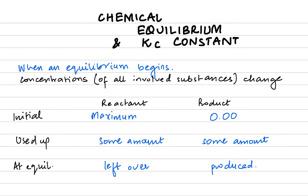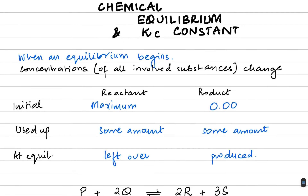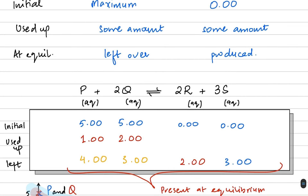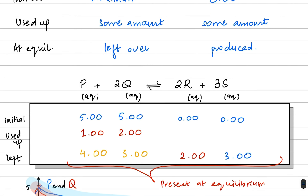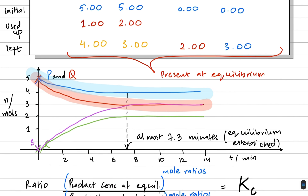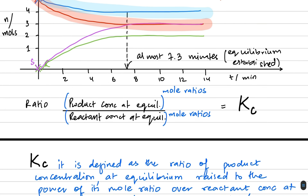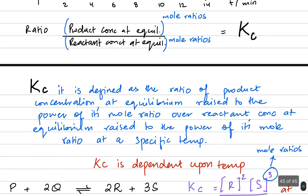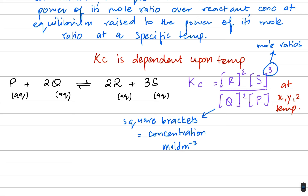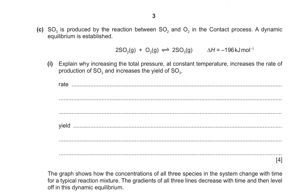Welcome back to another video by CamRoom5. Last time we talked about equilibrium and the Kc constant. As a reaction proceeds, reactant concentrations decrease while products increase. At equilibrium the lines become horizontal because the rate of forward reaction equals the rate of reverse reaction. Kc is the ratio of product concentration over reactant concentration at a specific temperature, with variable units. Today we are doing some past paper questions.